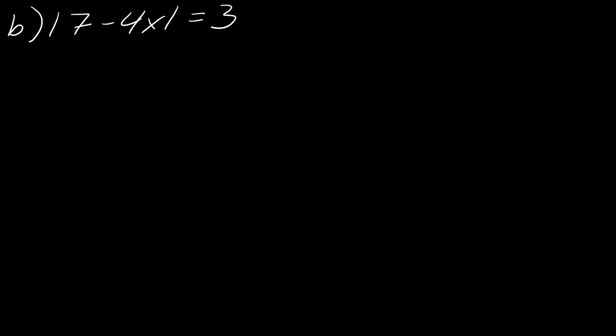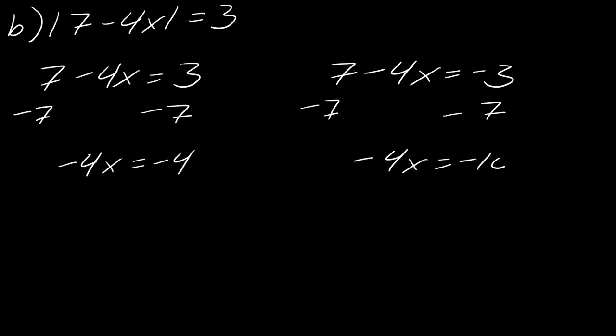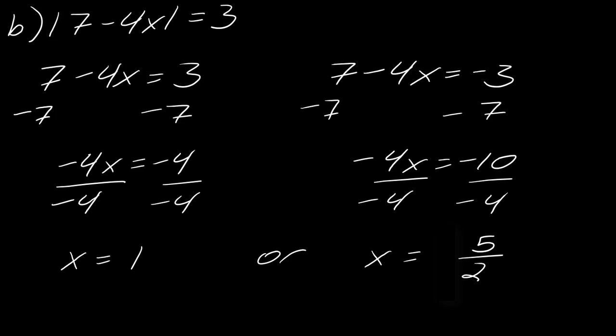Now, for this one, same thing, right? So I'm going to take 7 minus 4x equals 3. And 7 minus 4x equals negative 3. And just for the sake of time, I'll just go ahead and show you the steps real quick. And so there are my two solutions. So you've got all the work there. So just double check if you made a mistake. Look through and see if you can find like a sign error or something like that.